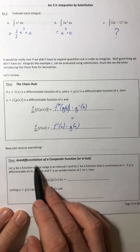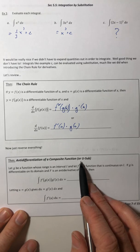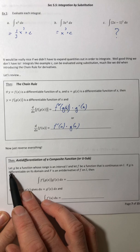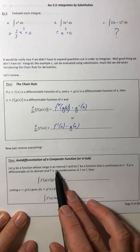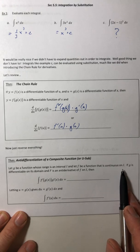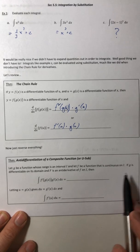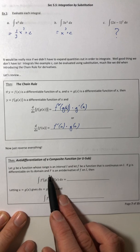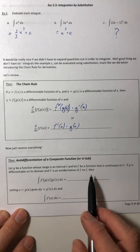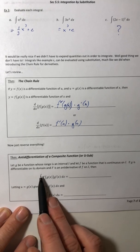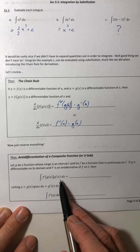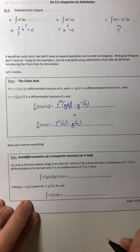So the anti-differentiation of a composite function, or in much simpler terms, a u sub. Let g be a function whose range is an interval i, and let f be a function that is continuous on i. If g is differentiable on its own domain, and capital F is an anti-derivative of little f.